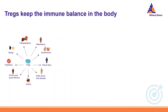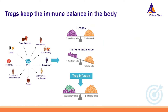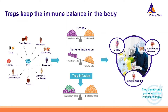T-regs are an attractive tool in the treatment of different diseases such as inflammation, autoimmunity, transplantation, graft-versus-host disease, and they also have to be considered in cancer. In the healthy body there is a good balance between regulatory T-cells and effector T-cells. However, during disease this balance can be disrupted, and a T-reg infusion can help replenish the T-reg compartment and restore that balance.